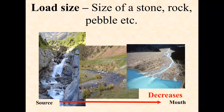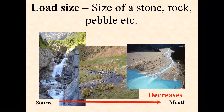If we consider load size — the size of pebbles, rocks, and boulders — in the upper course you've got huge boulders. In the middle course, the load size decreases; you have more pebbles, smaller boulders and rocks. By the time you get to the lower course, you're looking at the finest particles: sand, silt, clay, and still some pebbles but largely a lot of finer material. So as you move from source to mouth, load size decreases.